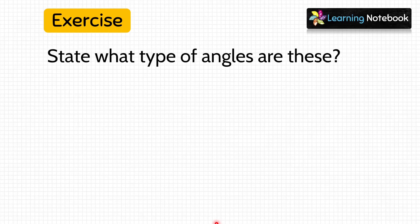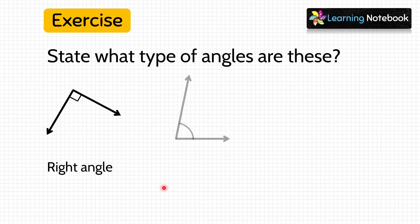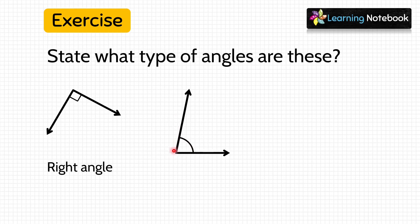The question is: state what type of angles are these. Look at the first figure carefully — can you see this symbol? This symbol denotes it is an angle of 90 degrees, so that means it is a right angle. Now let's see the second figure — here we can say the angle is less than 90 degrees, so this means it is an acute angle.